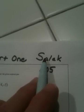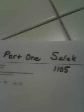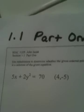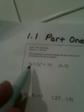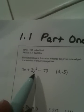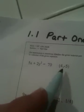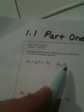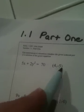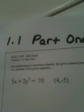Okay ladies and gentlemen, these are going to be the 1.1 Part 1 videos, John Sallick's class, Math 1105, Tallahassee Community College. The first problem gives us the equation 5x plus 2y squared equals 70 and wants to know if the ordered pair (4, -5) is a solution of the equation. Well, the problem is pretty straightforward in terms of how to approach it.